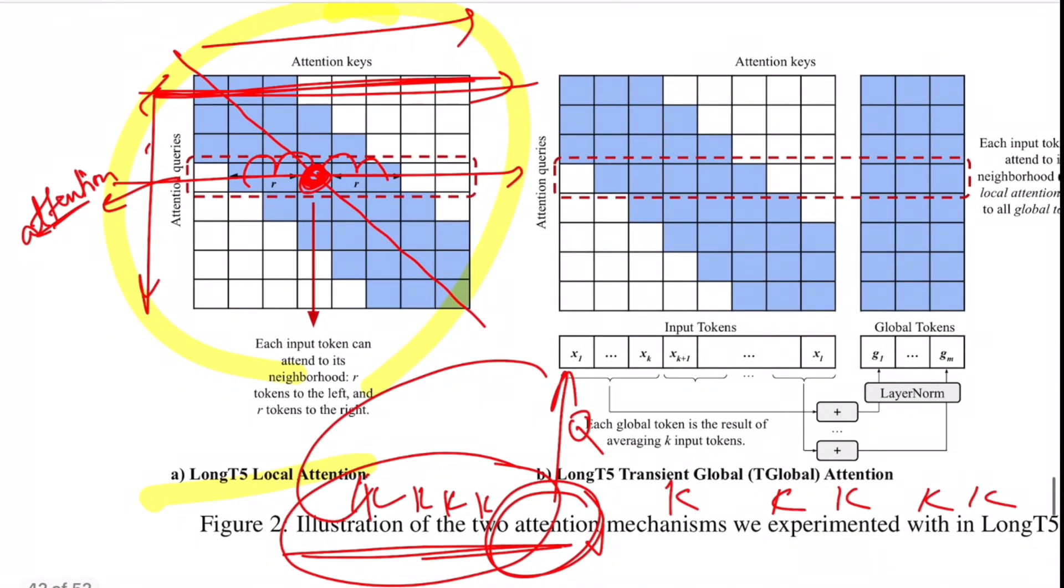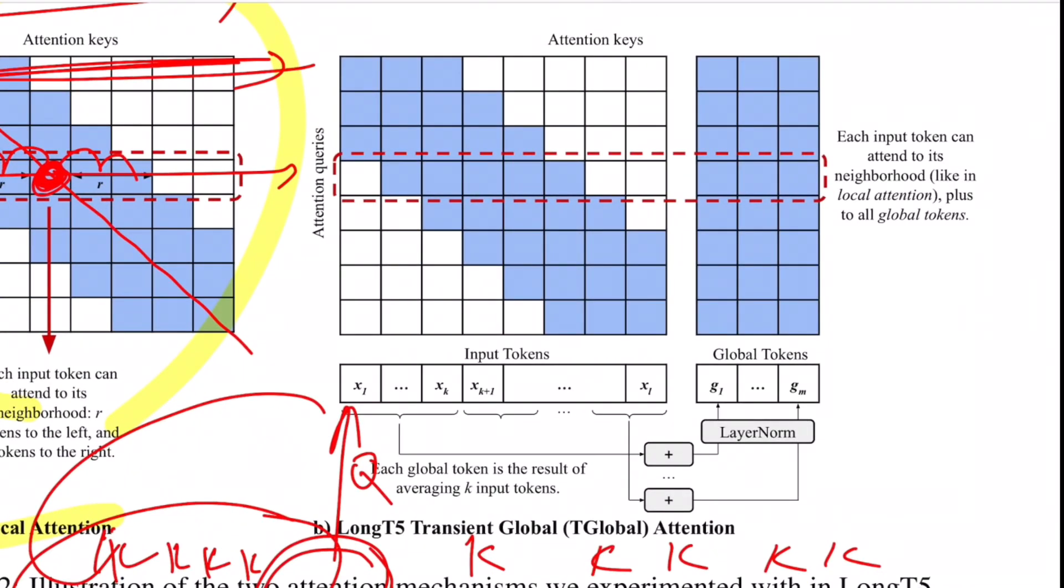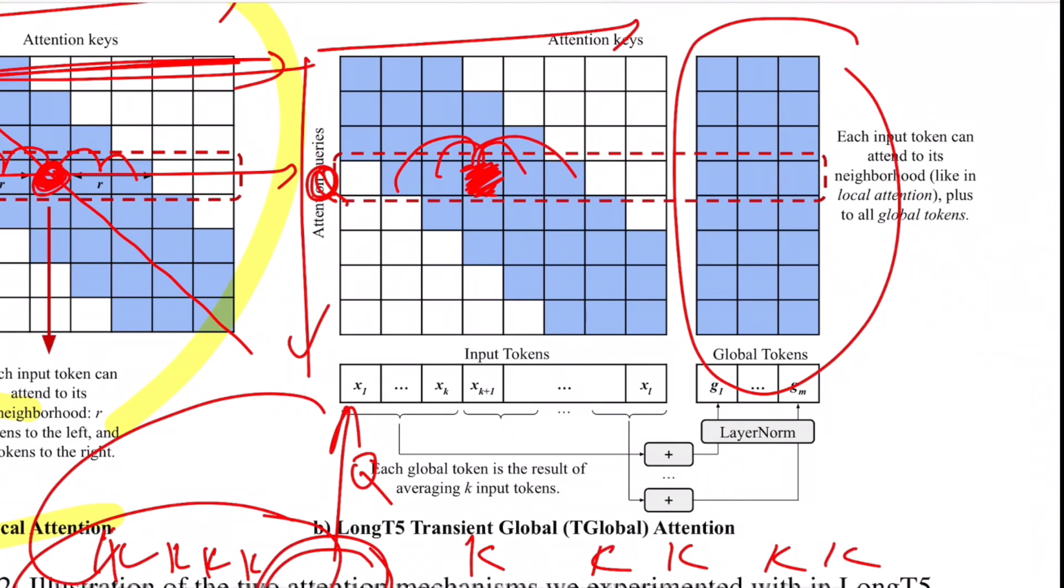The second one is transient global attention. And this is the picture that talks about it. So here again, we have attention queries over here, attention keys over here, the extra thing that you can see from the previous one is this matrix, because rest everything looks the same. For this query word, this is the center, this is the word itself, you're doing a local attention of R words to its left, R tokens to its right. But in the previous one, you had a disadvantage of not knowing what the 10th word or the 1000th word could be. So that way, you're missing out on the information of capturing a global sense of what's written in the entire context. So this matrix over here helps you achieve that in some sense.